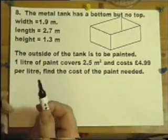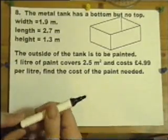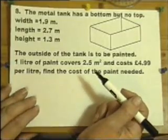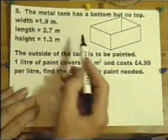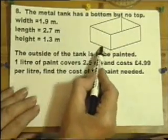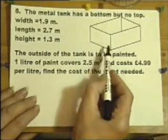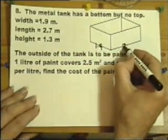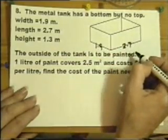I've got a metal tank and the tank has got a bottom but no top. Got the dimensions of the tank: the width is 1.9, the length is 2.7, and the height is 1.3 meters in each case.